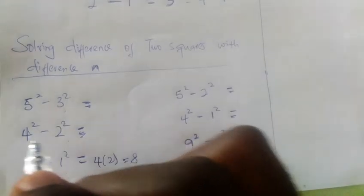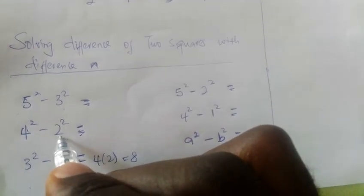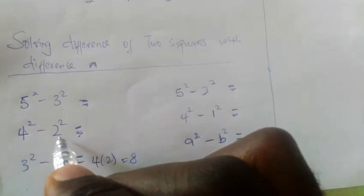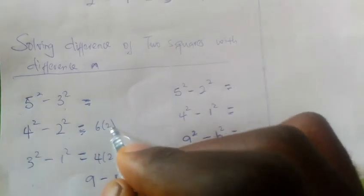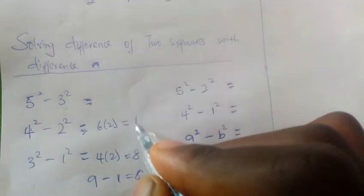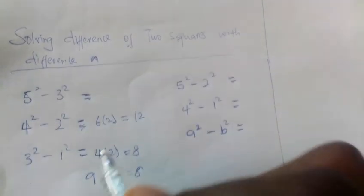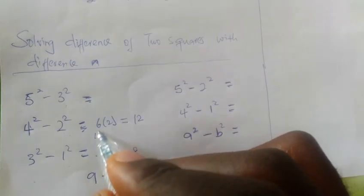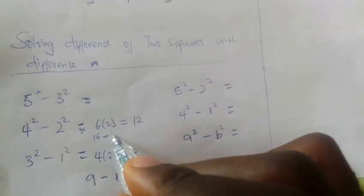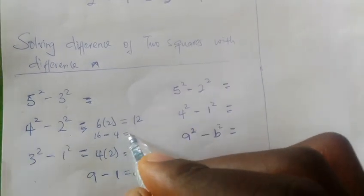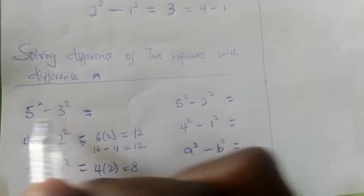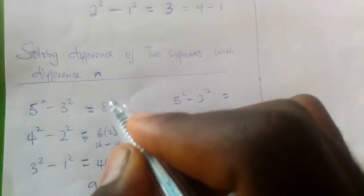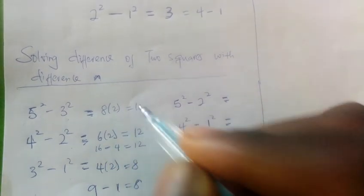For 4 squared minus 2 squared: 4 plus 2 is 6, then 6 times the difference — 6 times 2 gives 12. To prove it: 4 squared is 16 minus 2 squared is 4, which still gives 12. And for 5 squared minus 3 squared: since the difference is 2, it's 5 plus 3 equals 8, then 8 times 2, that's 16.